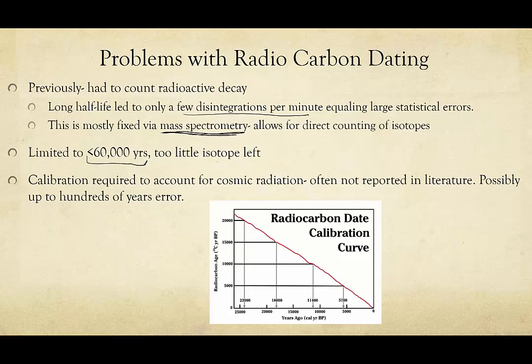Another source of possible errors is calibration. We don't always have the exact same amount of cosmic radiation coming in. Because of that, things that died at different time points in history have differing amounts of carbon-14 to begin with. This means they'll have a differing amount of carbon-14 now, based on when they were living and when they died. So you end up having to make a calibration curve to account for differences in the atmospheric amount of carbon-14.